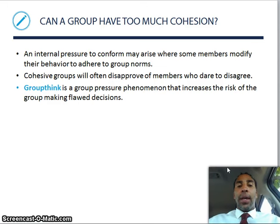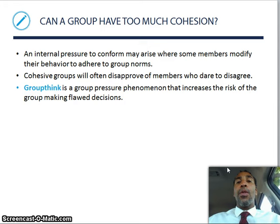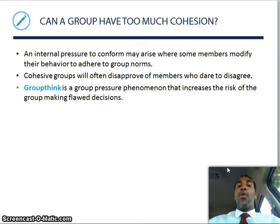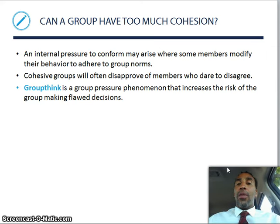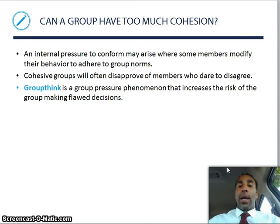Can a group have too much cohesion? Absolutely. Internal pressure to conform may arise when members modify their behavior to adhere to group norms — remember groupthink? Cohesive groups will often disapprove of members who dare to disagree. Groupthink is a group pressure phenomenon that increases the risk of making flawed decisions, like with the Challenger disaster. Some people try to stick to their guns and say this is not the route we should go, but get overruled. Groupthink is not a good thing.